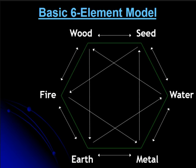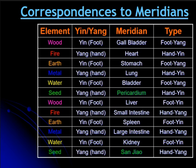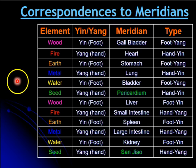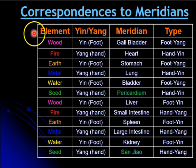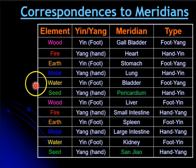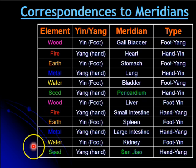This then becomes the basic six element model, and I'm going to be exploring this model in many videos to come. Here we see the correspondences to the meridians. First we have the column of the elements: wood, fire, earth, metal, water, seed — going around the six element model twice.